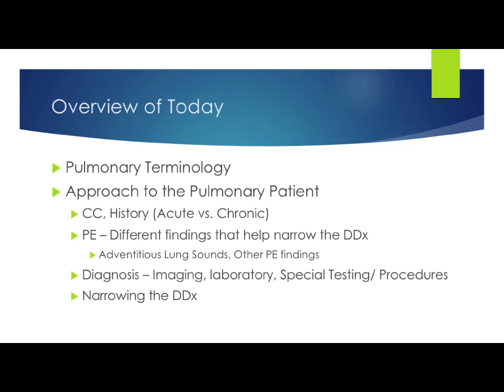We're also going to go into what we call adventitious lung sounds, which are not supposed to be there, and then some other important physical exam findings. Then we'll pull it all together and talk about how we use certain imaging in the pulmonary patient — such as chest x-rays, CT scans, etc. — and at the very end we'll bring it back to narrowing down the differential based on what we find in the history and physical exam.